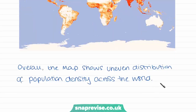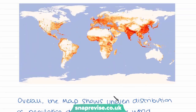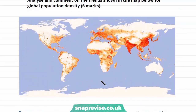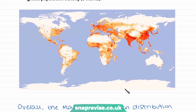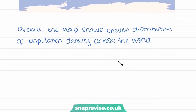When answering a question that asks you to analyse a map or figure, the first thing to write is the overall pattern. For this map: overall, the map shows an uneven distribution of population density across the world. As we saw, if population density was completely even, everywhere would have the same colour. However, we have very stark differences between areas of high and low population density, so we can say overall the pattern is uneven.